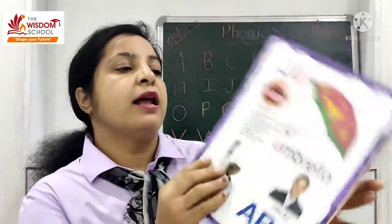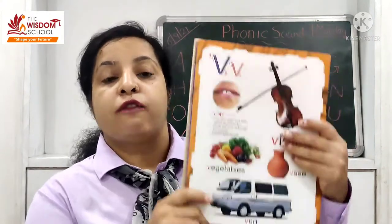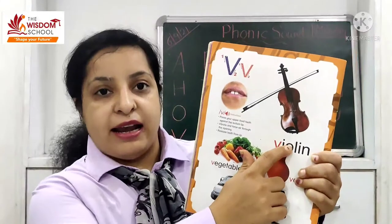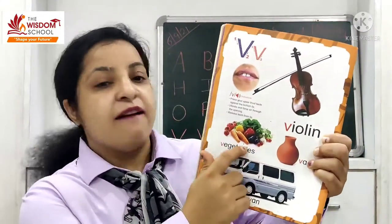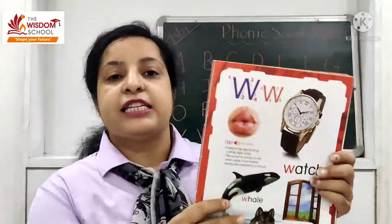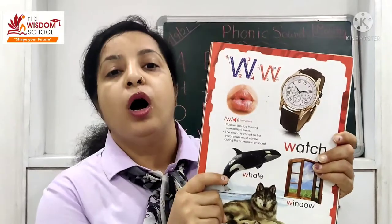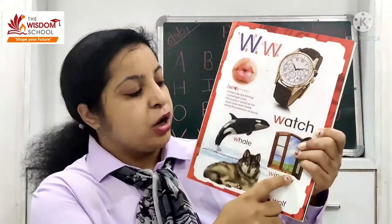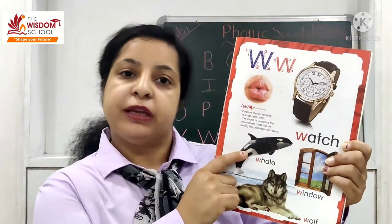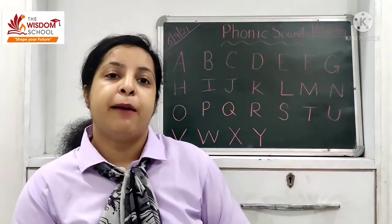Next letter is letter V and the sound of letter V is B. Words: Violin, Vars, Vegetables, Van. Next letter is letter W and the sound of letter W is W. Words: Watch, Window, Wolf, Way. Do you notice the difference between the sounds of V and W?